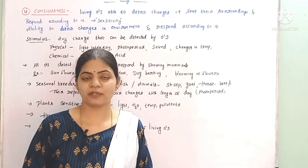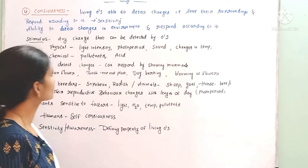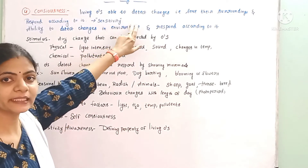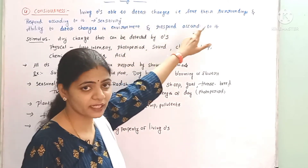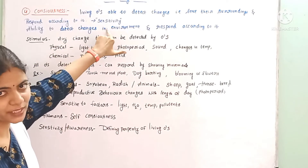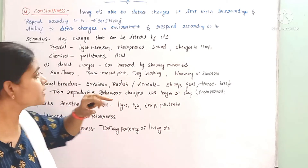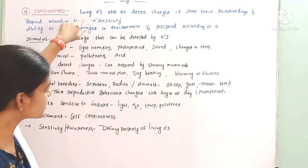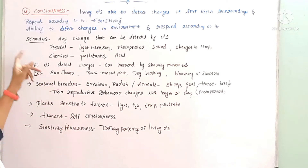The next unique feature exhibited by living organisms is consciousness. Living organisms are able to detect changes in their surroundings, sense their environment, and act according to it. This ability is called sensitivity — the ability of a living organism to detect changes in its environment and respond accordingly.